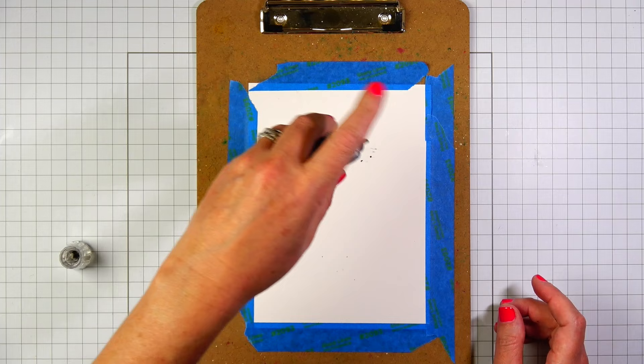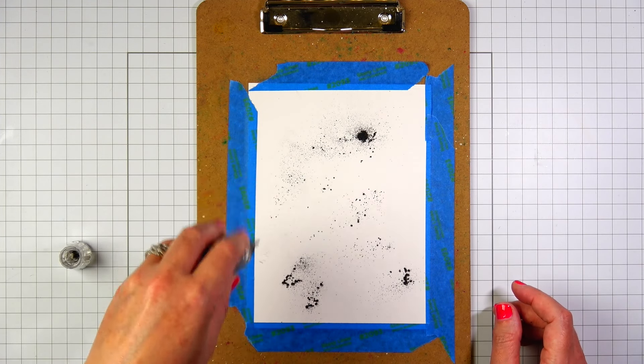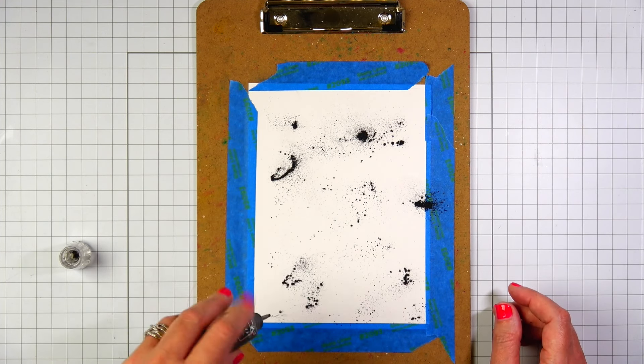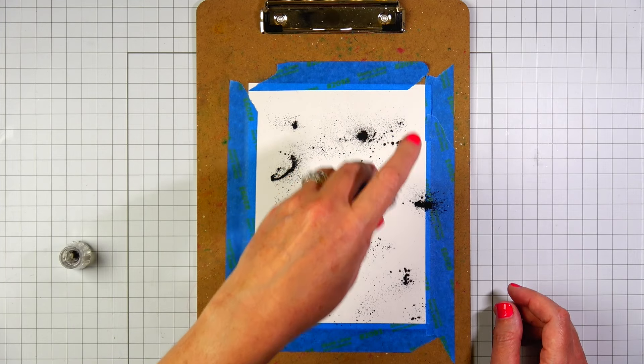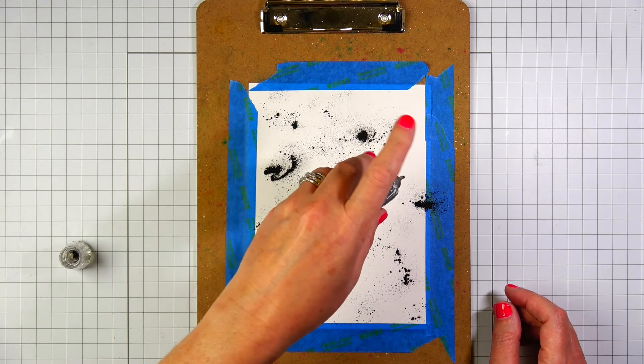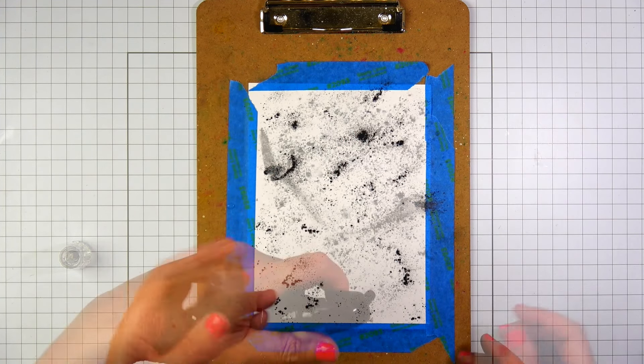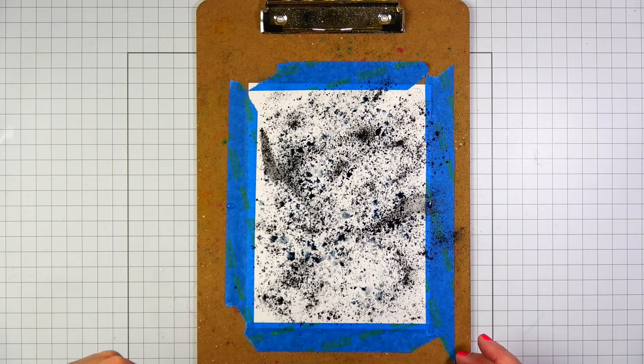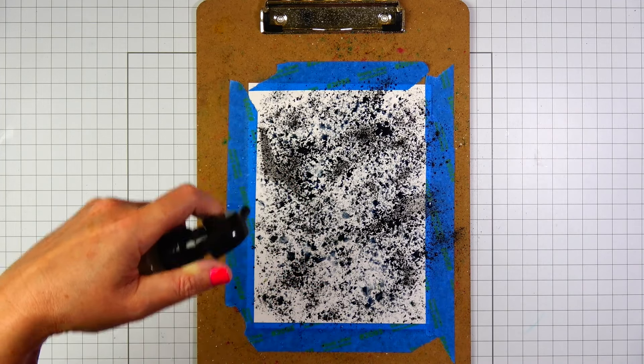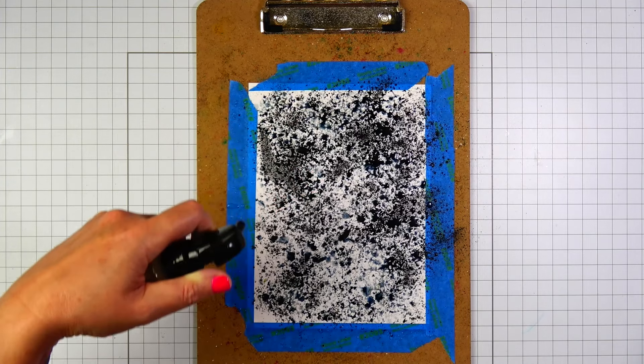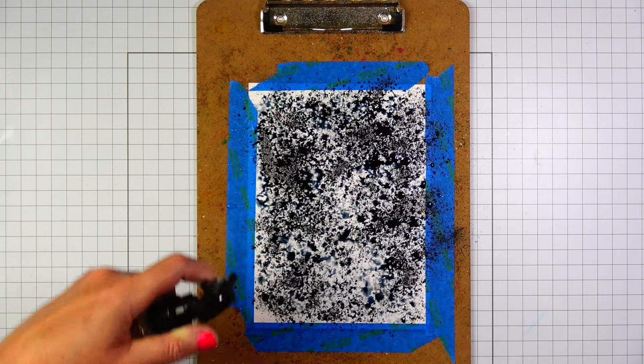First, I want to make a background for the window. I have Storm Cloud Nouveau Shimmer Powder that I am sprinkling all over a 6x8 sheet of mixed media paper. Once I'm done sprinkling the powder, I'm going to use my water bottle to spray water over the powder and this is going to open up the pigments.